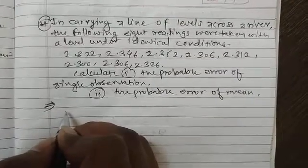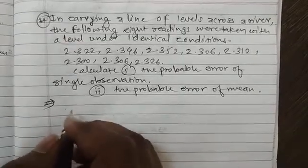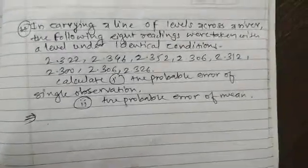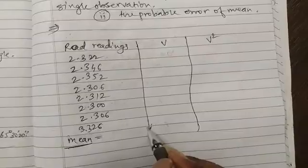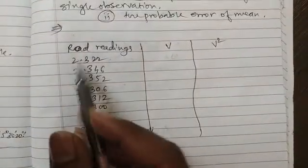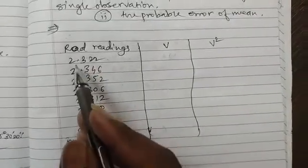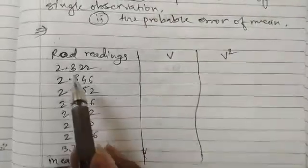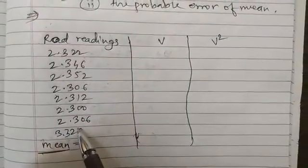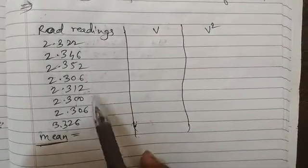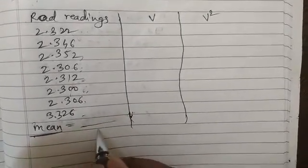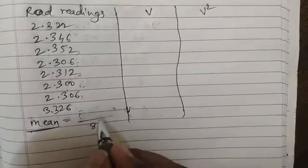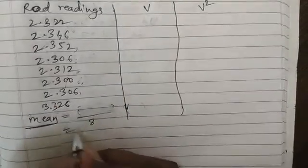The computation of V and V² is to be arranged first in table format, so I will draw the table. I have written all the raw readings in the first column. Now we will add these readings and take the average or mean. There are 8 readings. So I will add these 8 readings and divide by 8 to get the mean.